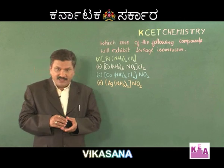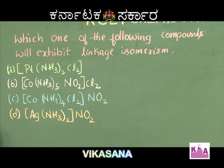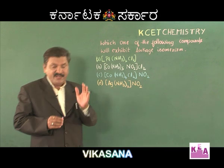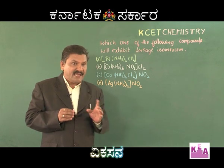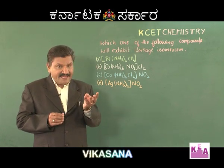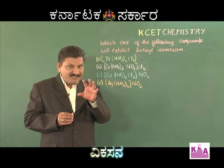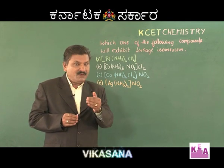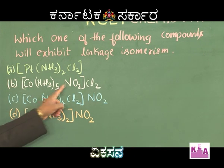Now we have a question related to linkage isomerism: which one of the following compounds will exhibit linkage isomerism? The condition for a complex to exhibit linkage isomerism is that it must have an ambidentate ligand. Examples of ambidentate ligands are NO₂⁻, CN⁻, and SCN⁻. Among the options, complex number 2 has an ambidentate ligand.